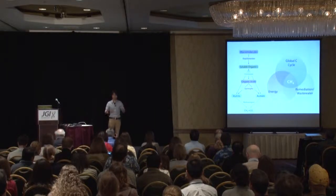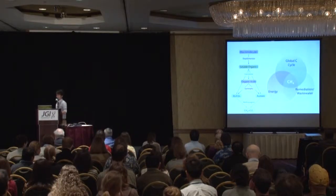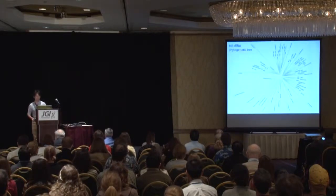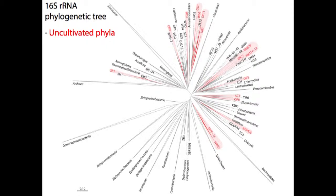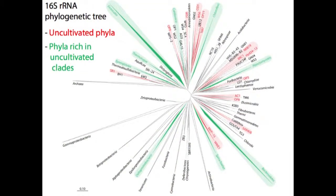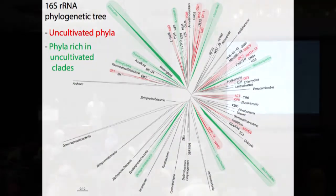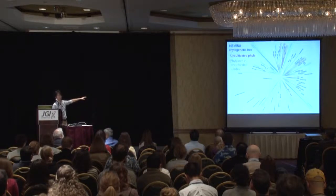Methane produced from this process is also a great energy source, so there's a three-fold interest in understanding the ecology behind methanogenesis. This is a 16S ribosomal RNA-based phylogenetic tree in radial form. Highlighted here are our candidate phyla — uncultured phyla associated with methanogenic environments — as well as many phyla with cultivated representatives that have uncultured clades with no genetic or physiological insight. Our interest covers both the phyla highlighted in red and clades highlighted in green.